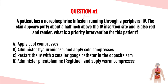Question number one. A patient has a norepinephrine infusion running through a peripheral IV. The skin appears puffy about a half inch above the IV insertion site and is also red and tender. What is the priority intervention for this patient? Is it A, apply cold compresses; B, administer hyaluronidase and apply cold compresses; C, restart the IV with a smaller gauge catheter in the opposite arm; or D, administer phentolamine or Regitine and apply warm compresses?